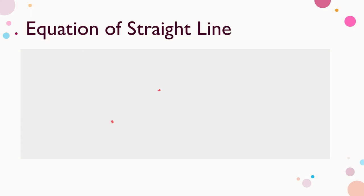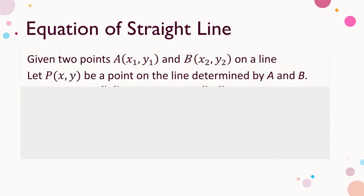Two points determine a straight line. Under a rectangular coordinate system, a point refers to an ordered pair (x, y), which are called the coordinates of the point. The equation of a straight line is a relation of the x, y coordinates of any point on the line. Suppose we are given two points A(x₁, y₁) and B(x₂, y₂) on the line. Let P(x, y) be an arbitrary point on the line. We look for an equation showing the relation of x and y. Since A, B, and P are on the same line, we say they are collinear — meaning the slopes formed by any two points are equal.